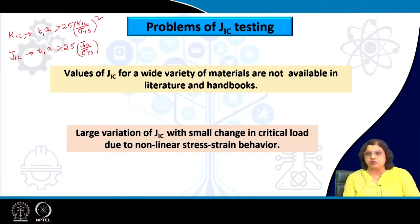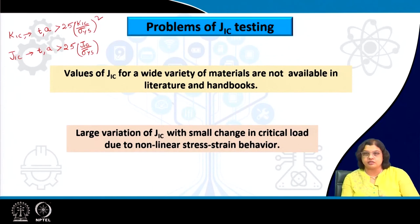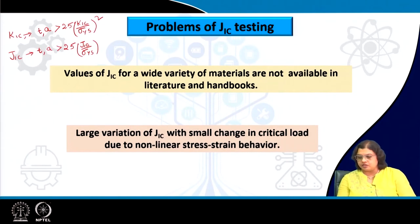J1c however depends on specimen size. If someone at another lab tests the same material with slightly different thickness, this can lead to a difference in J1c value — meaning we cannot use that data for our purpose. This makes it quite difficult to determine J1c experimentally because literature values are not available for all different materials at all different thicknesses.